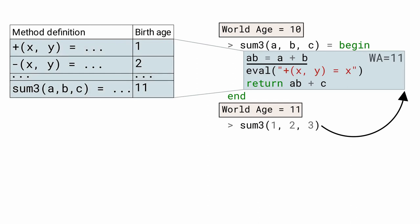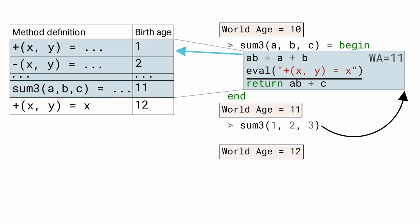When we get to a plus b, there is only one definition of plus, so we use it. Then, eval executes and redefines addition. This, in turn, increments world age, and the new definition of plus gets stored in the method table with a birth age of 12.